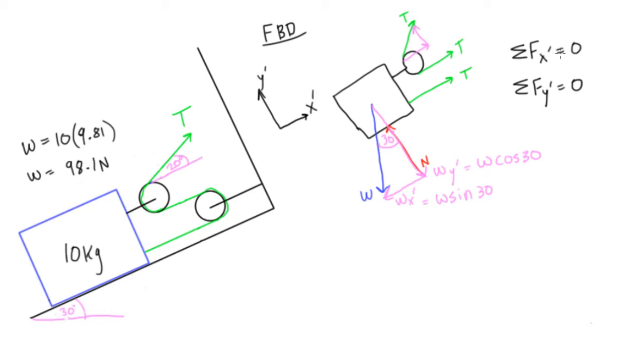We're going to have negative w sine 30, so that's negative 98, oops, 98.1 times sine 30. Okay.